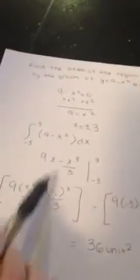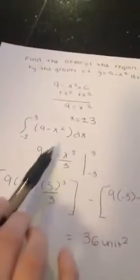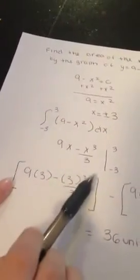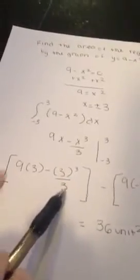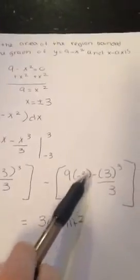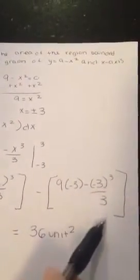Now we plug in 3 and subtract the result of plugging in negative 3. So we get 9 times 3 minus 3 to the 3rd power divided by 3, minus the quantity 9 times negative 3 minus negative 3 to the 3rd power over 3.